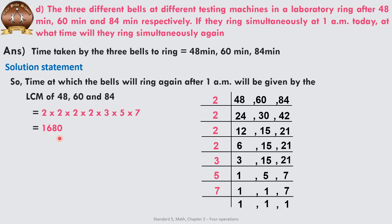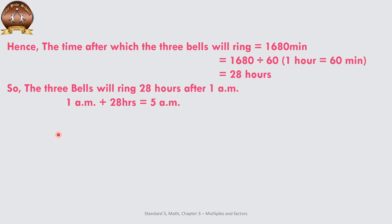The three bells are going to ring again after 1680 minutes after 1 AM. We convert 1680 minutes into hours: since 1 hour equals 60 minutes, dividing 1680 by 60 gives us 28 hours. So the three bells will ring again 28 hours after 1 AM.